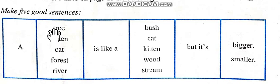A tree is like a bush but it is bigger. A kitten is like a cat but it is smaller. Kitten jubili ki tarah hota hai magar yeh chhota hota hai. A cat is like a kitten but it's bigger.